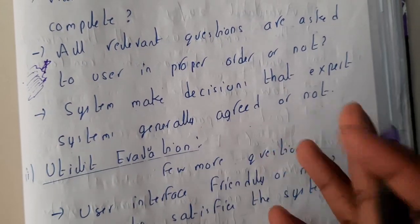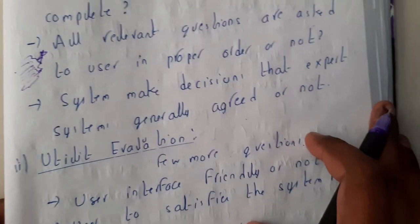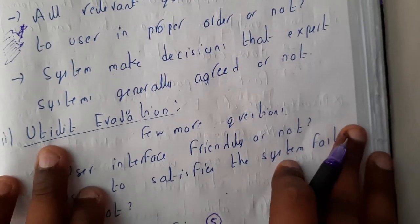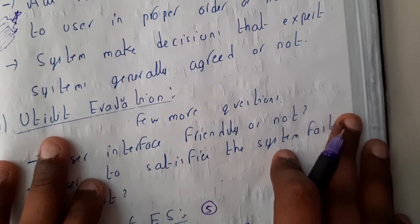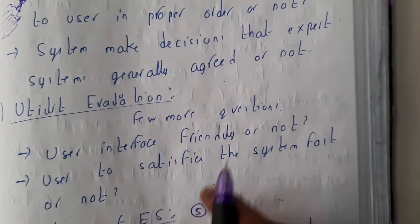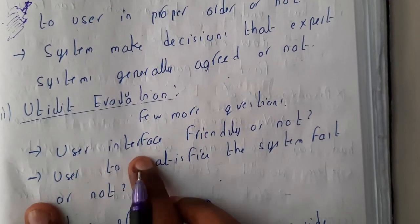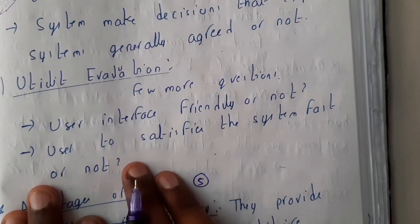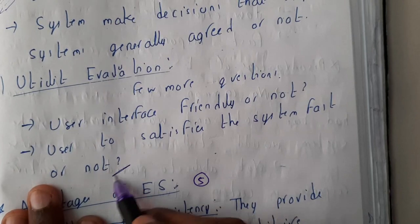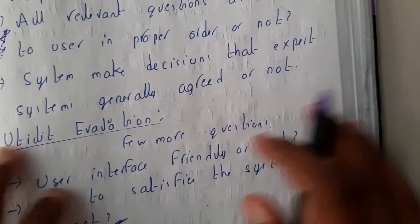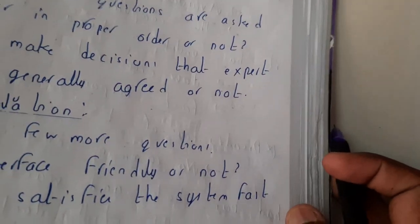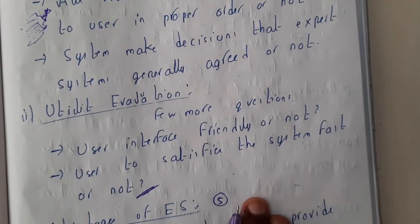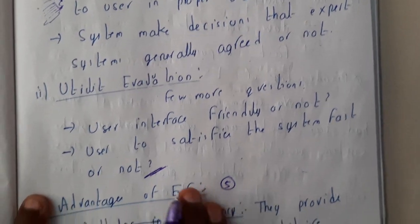Also, whether the system makes a decision that the expert system generally agreed on or not — that will also be decided. Utility evaluation is about observing things like whether the user interface is friendly, whether the user is satisfied, and whether the system is fast. In other words, utility covers questions relating to the particular user — whether the interface is fast, and so on.